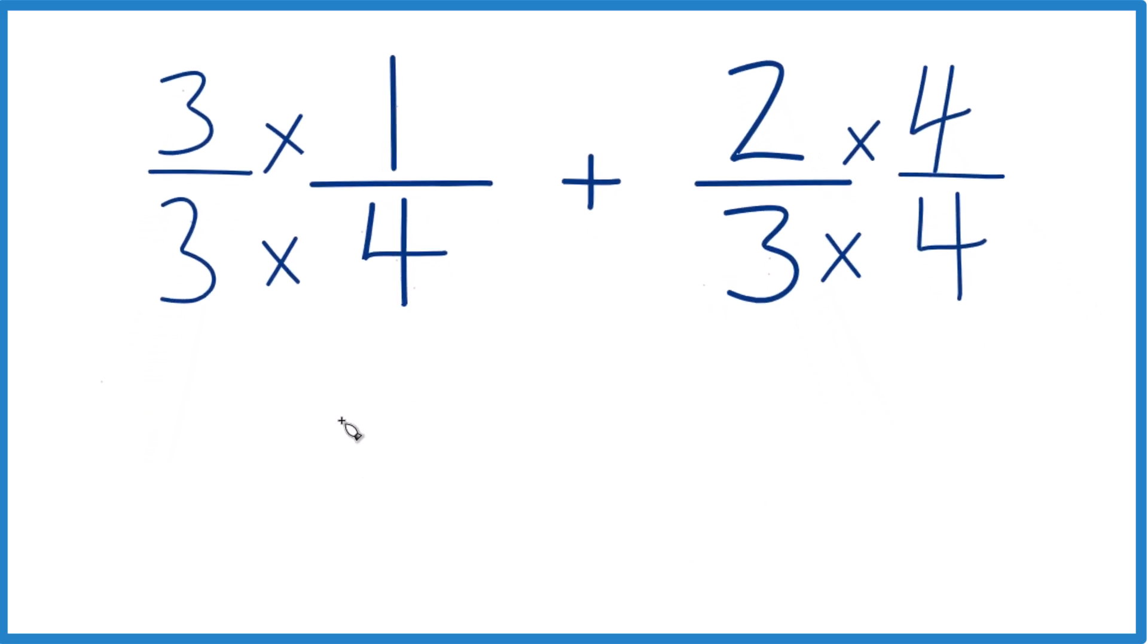Now 3 times 1 is 3. 3 times 4, that's 12. Then we have 2 times 4, that's 8. And 3 times 4 is 12.